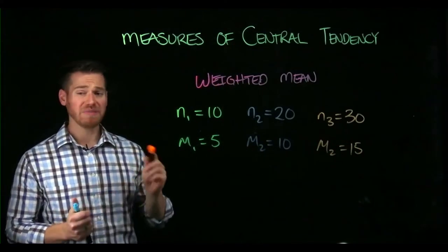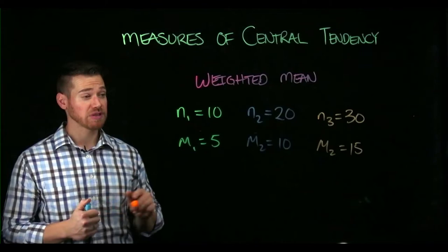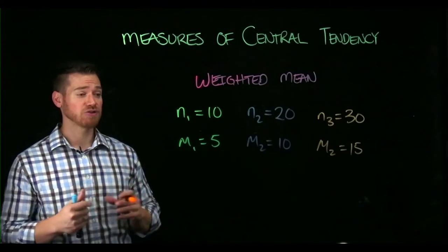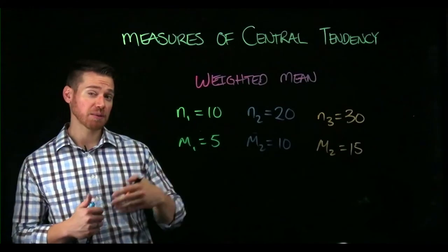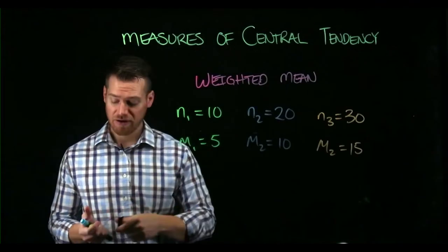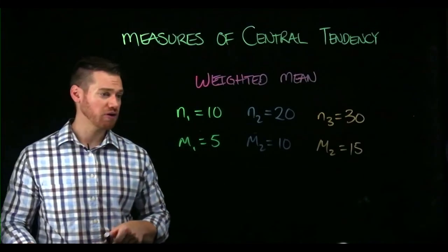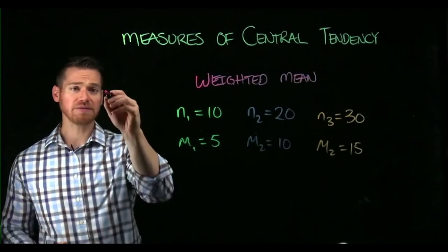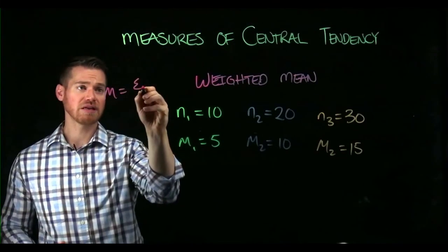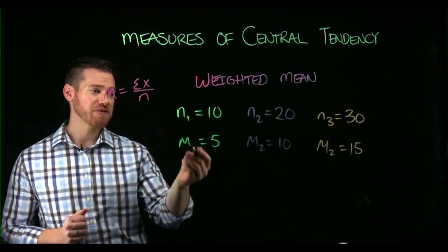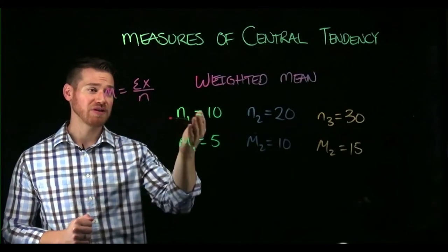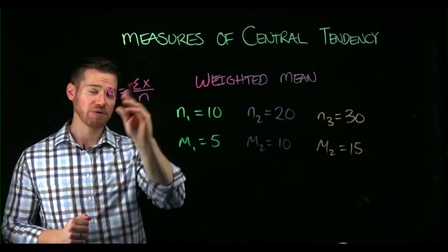So what would be the mean for all of these samples if we aggregate it. So to weight the mean, what we're going to do is remember that we can obtain the sum of scores by going back from this. Because if you recall, a mean is a sum of scores over a sample size. So if we have the mean and we have the sample size, we can see what the sum would be.